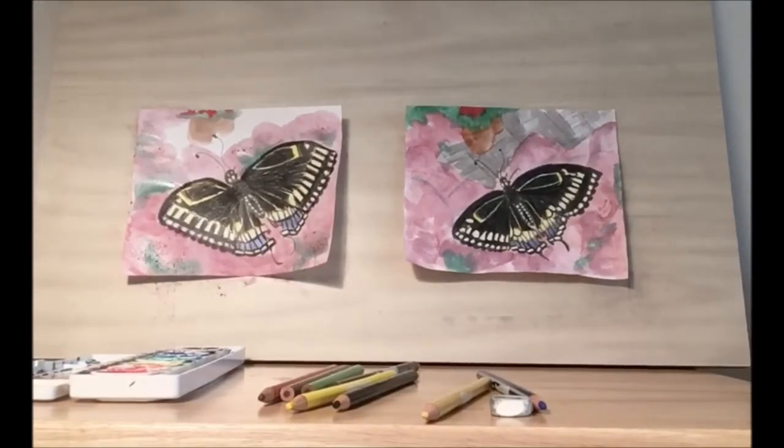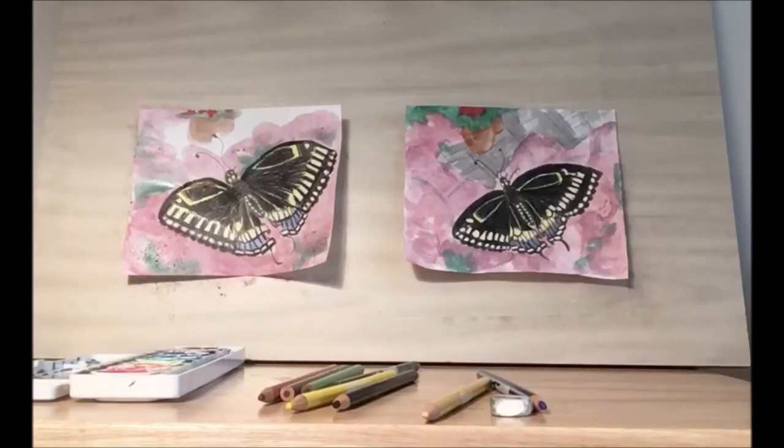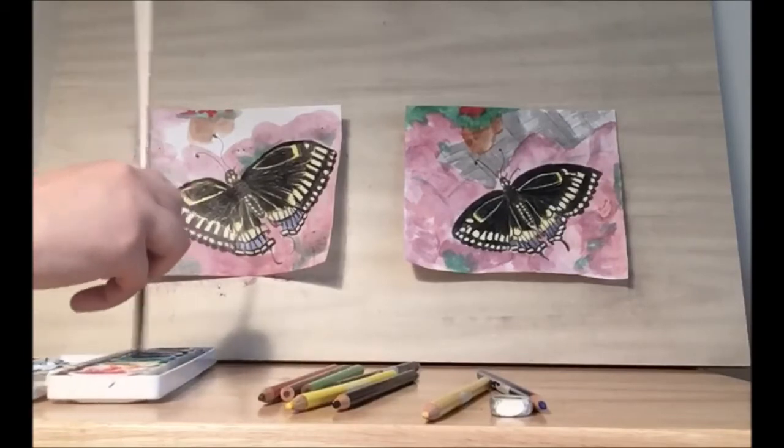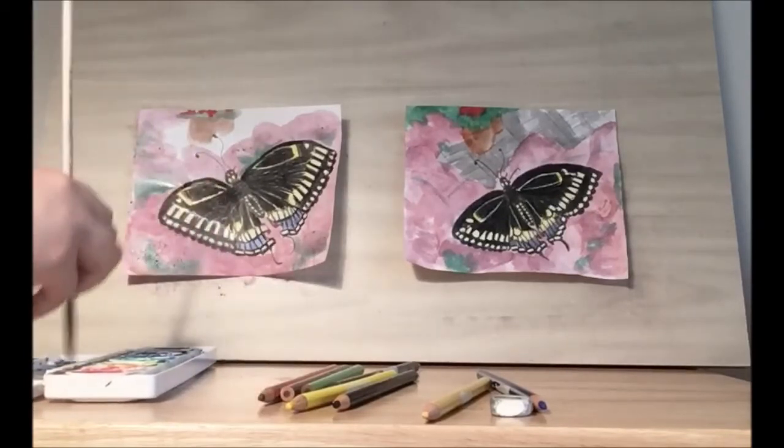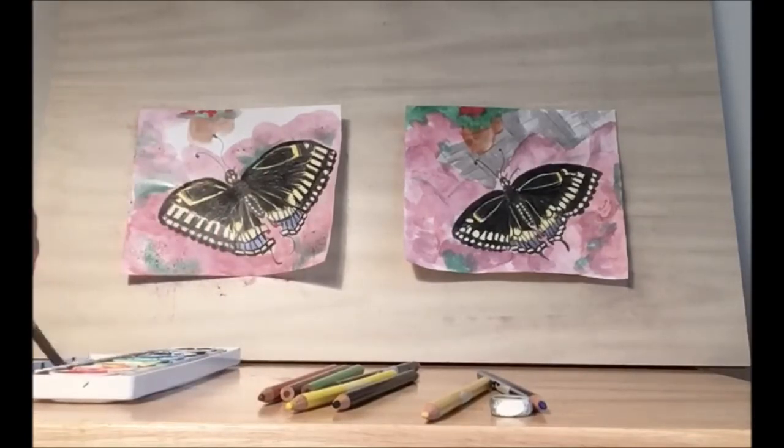Then finally we have the bricks. So the bricks is going to be gray. Now I used some blue mixed with the black to make it gray instead of just straight black.